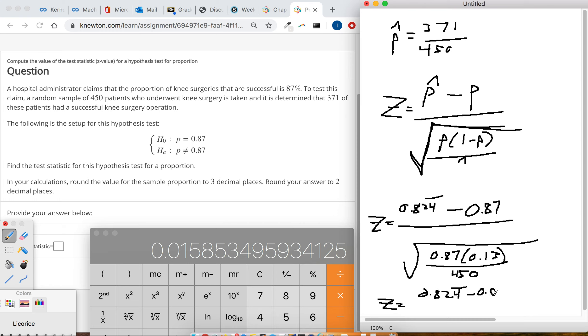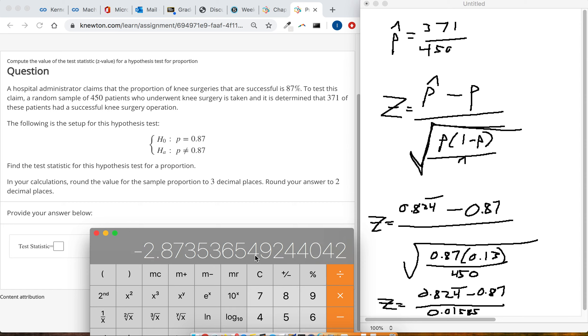Here's the numerator. The bottom of our test statistic is 0.1—oh, sorry, 0.01585. So now we can quickly come to the final conclusion. Just take the top, which is negative 0.045, divided by our bottom. We've got a test statistic of negative 2.87, two decimal places, negative 2.87.